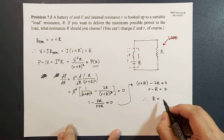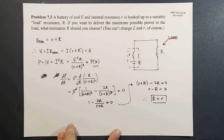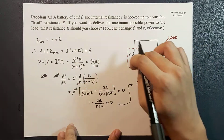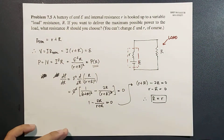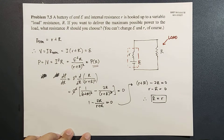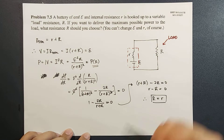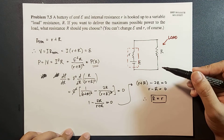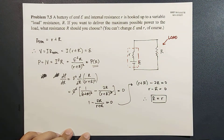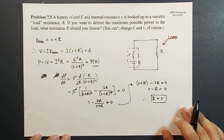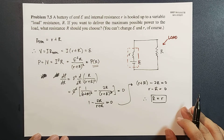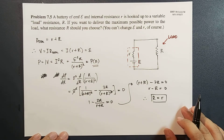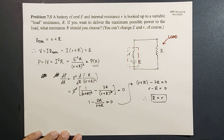Therefore, to maximize the power delivered to the load, the load resistance R should equal the internal resistance r. That's it — easy, right! That's all for now. We will solve more problems later. Thank you for watching, and I'll see you guys in the next video. Bye!